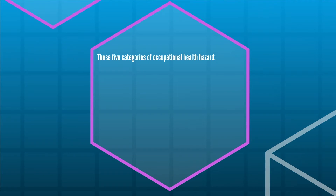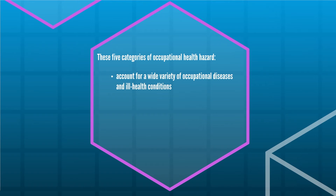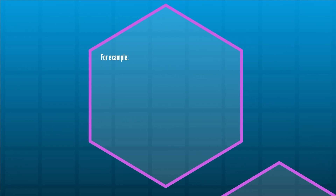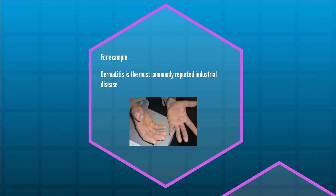These five categories of health hazard, between them, account for a wide variety of occupational diseases and ill health conditions, many of which will be studied during this unit. Some of these occupational diseases are relatively common and are found in a wide variety of workplaces. For example, dermatitis is a common occupational disease found in many different types of workplaces, from restaurants and kitchens to science laboratories.